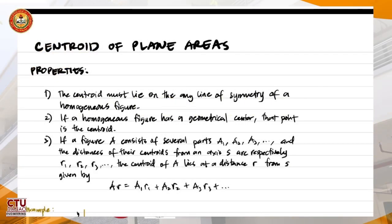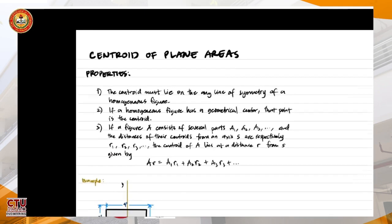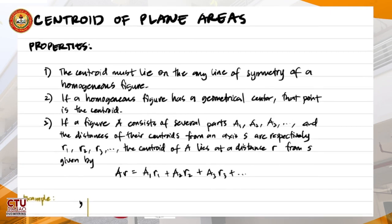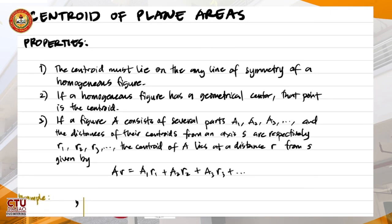Okay, let's start. So today we'll discuss about the centroid of plane areas. Here are the three properties of centroids. Number one: the centroid must lie on any line of symmetry of a homogeneous figure.